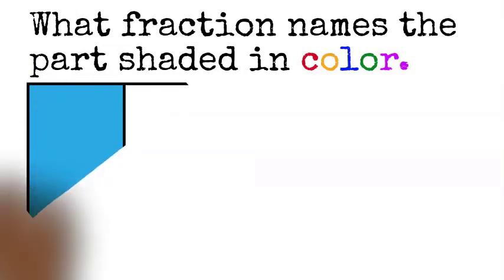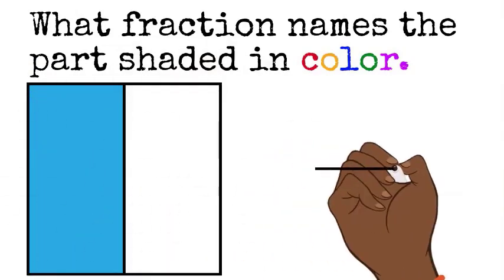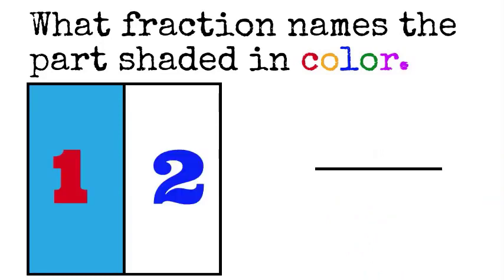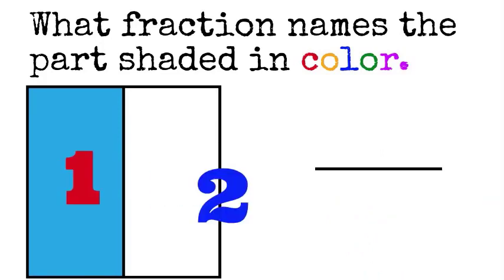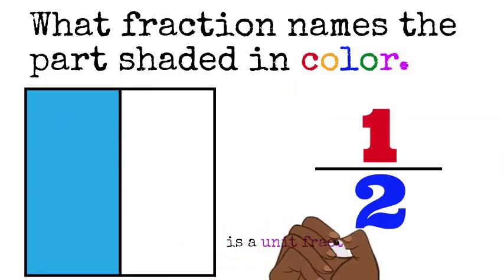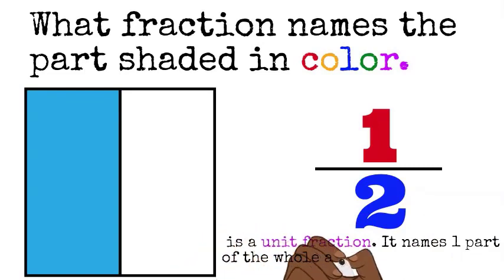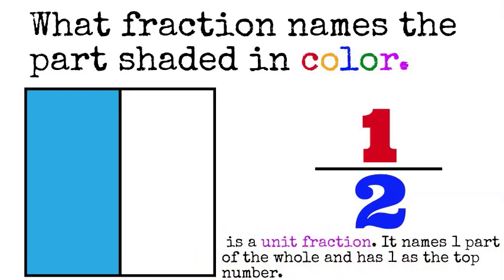Now, what fraction names the shaded part that is colored or the part that is colored? We're looking at two total pieces. So, two would be my bottom number and one is my top number. This is one-half. And one-half is a unit fraction. It names one part of the whole. It has one as its top number.